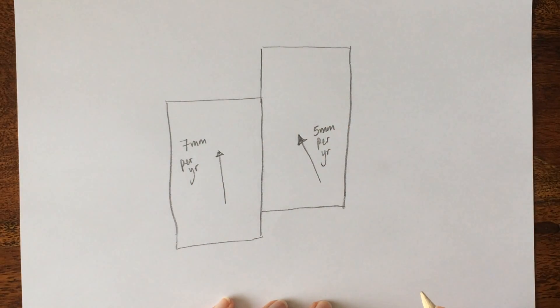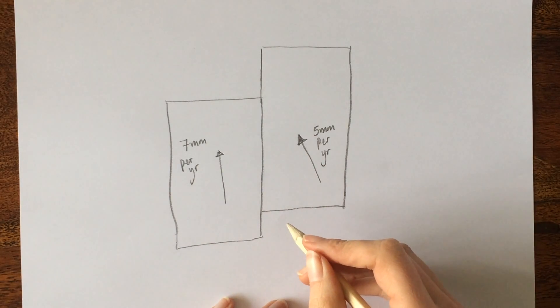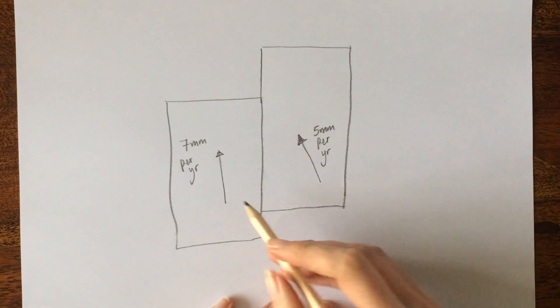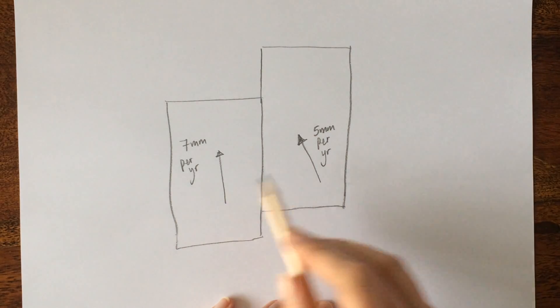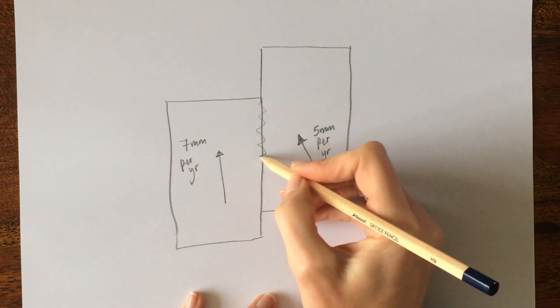We can't see the convection currents in this diagram because they're underneath these two pieces of crust. But what we have got is because this piece of crust is traveling faster than this piece, they're going to get stuck along this edge.